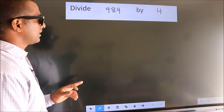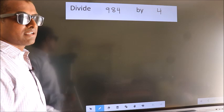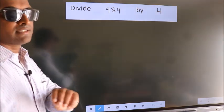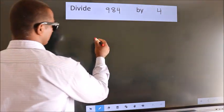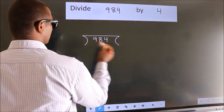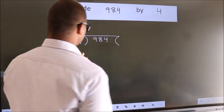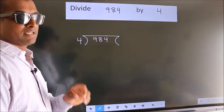Divide 984 by 4. To do this division we should frame it in this way. 984 here, 4 here. This is your step 1.